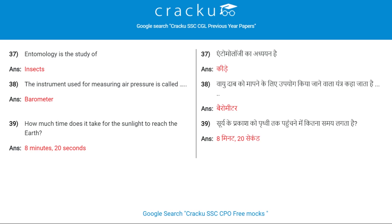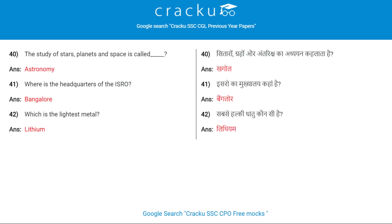The instrument used for measuring air pressure is called a barometer. How much time does it take for sunlight to reach the earth? 8 minutes 20 seconds. The study of stars, planets and space is called astronomy. Where is the headquarters of ISRO? Bangalore.